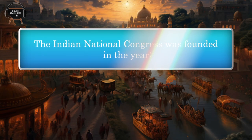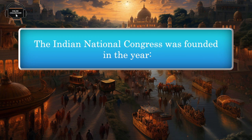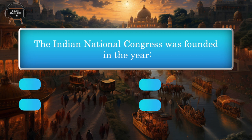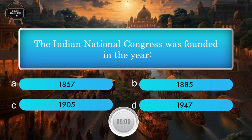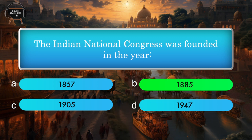The Indian National Congress was founded in the year — 1857, 1885, 1905, 1947. Answer: 1885.